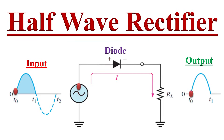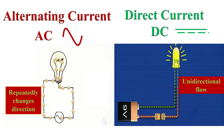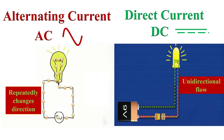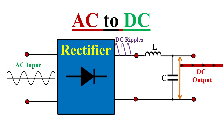Hello friends, welcome to the YouTube channel Electronics. Today we will learn about the half-wave rectifier. In an earlier video we discussed alternating current and direct current. Alternating current repeatedly changes its direction while direct current flows in only one direction. To convert alternating current into direct current we use a device called a rectifier.